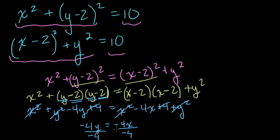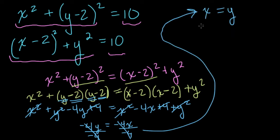What's this going to do? Well, -4x divided by -4 is just x, and -4y divided by -4 is just y. So now we have this statement: x equals y. And what that means essentially is that these two equations will equal each other at points where the x and y values are the same.